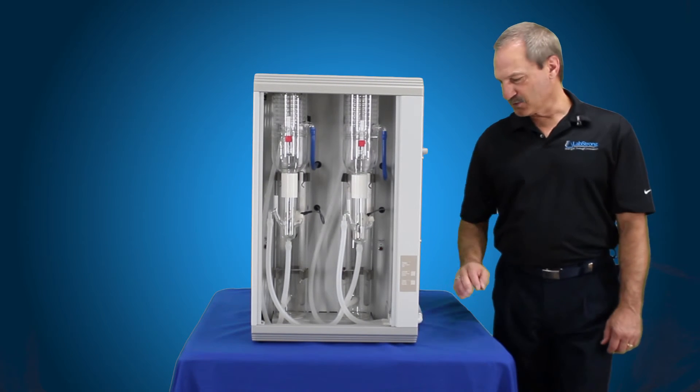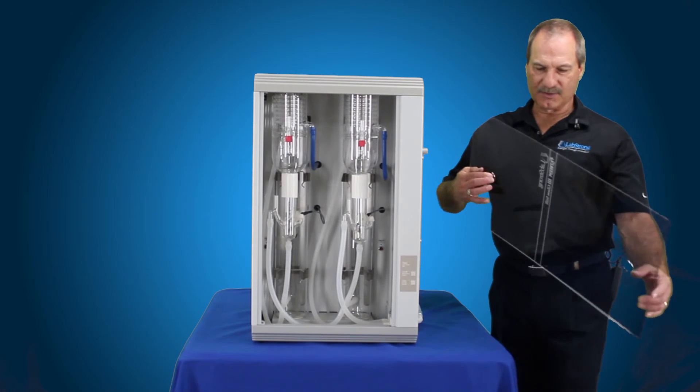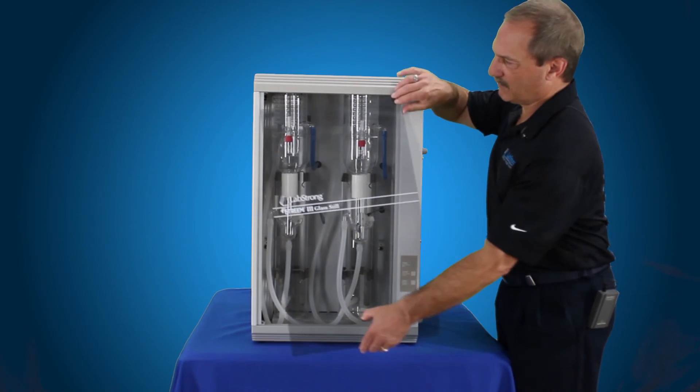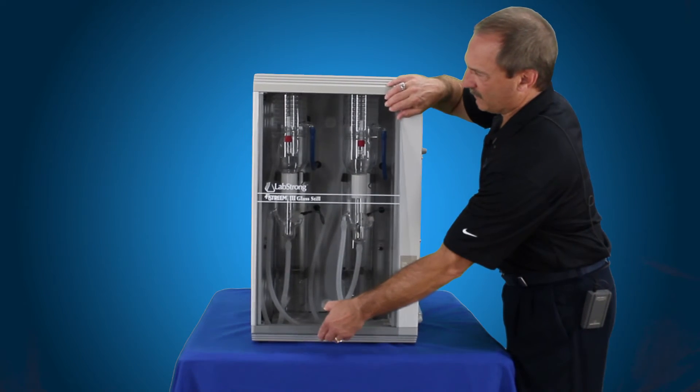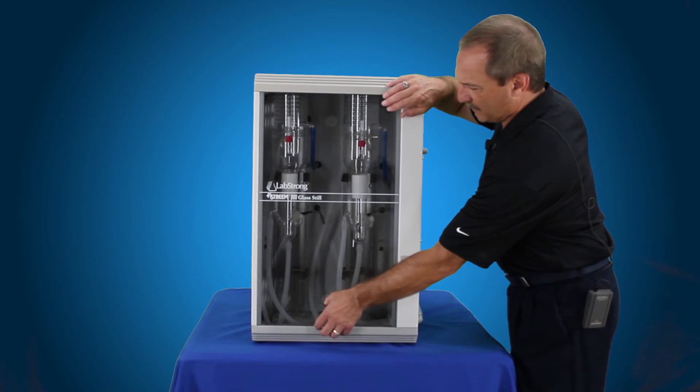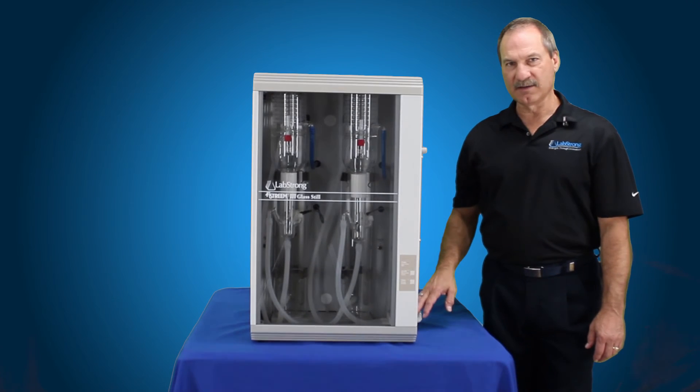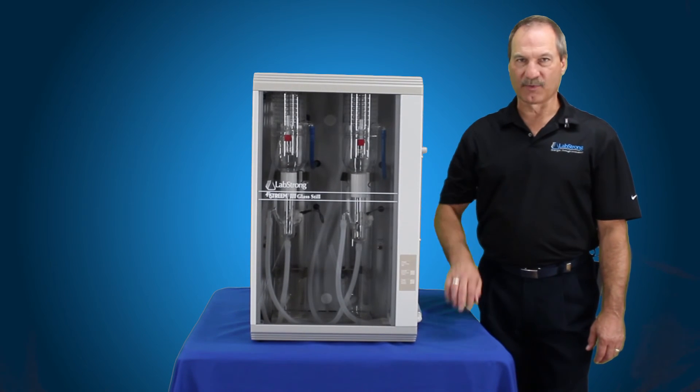Now that you've got those replaced and it's ready to start back up again, grab your door. Always operate your still with the door in place. Simply put that up inside of the slotted hole on top, slide the bottom into the slotted hole in the bottom, and then you can go ahead and turn your power back on, turn your water back on, and operate your still.